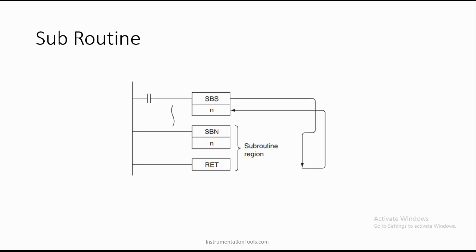First, we use SBS to call the subroutine. You call it using some run condition, and if the number N matches with the subroutine entry number, it will perform the task inside that subroutine. You enter the subroutine using the return function, and using this subroutine region, you define the function to be performed when it is called.